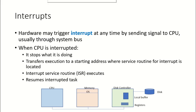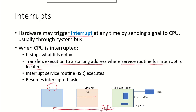Anytime any component like an input/output device wants to communicate with the system, it will send an interrupt. The hardware may trigger an interrupt at any time by sending a signal to the CPU through the system bus. Whatever task the CPU was doing — if it was executing an instruction — it will complete that instruction, then stop the task and transfer execution to the starting address where the interrupt service routine is located. Each kind of interrupt received by the CPU is handled by a particular routine known as the interrupt service routine, and the CPU will start running this routine to take care of the received interrupt.